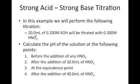In this example we have 20 milliliters of 0.200 molar OH⁻ and we're adding different volumes of 0.300 molar nitric acid. We're going to calculate the pH at four points: before any nitric acid is added, after 10 milliliters of nitric acid is added, at the equivalence point, and after the addition of 40 milliliters of nitric acid.